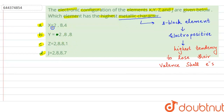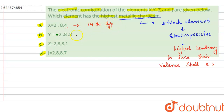Looking at option A, element X has electronic configuration 2,8,4. In the outermost shell we have 4 electrons, which means this element belongs to the 14th group. It is a 14th group element, which is a p-block element.